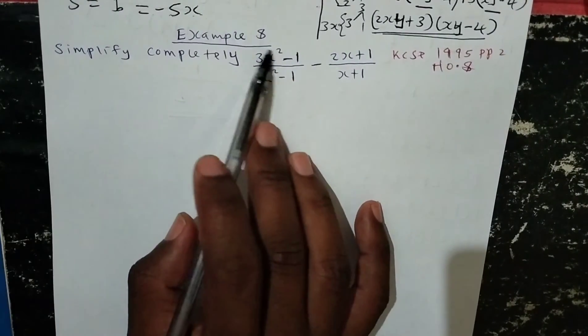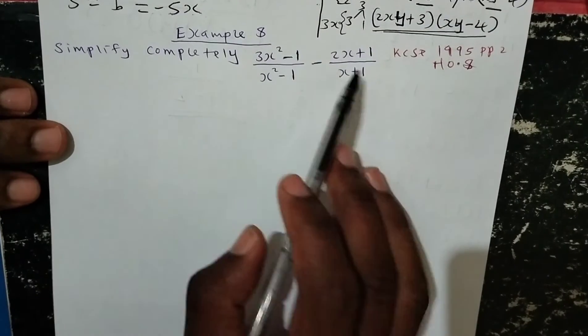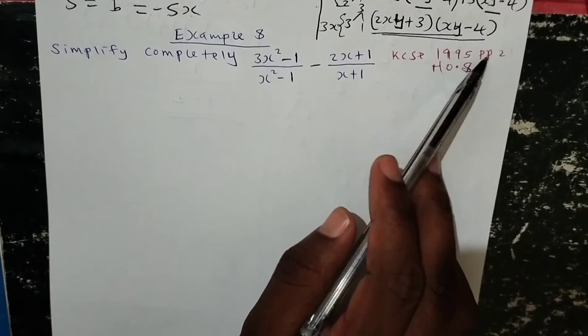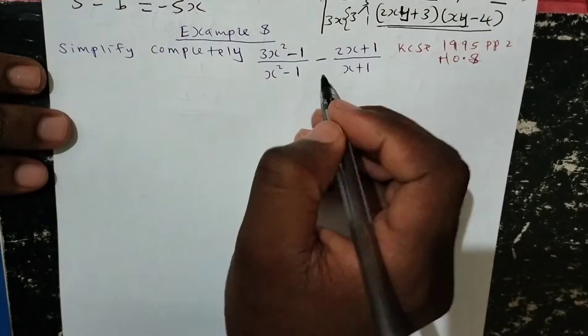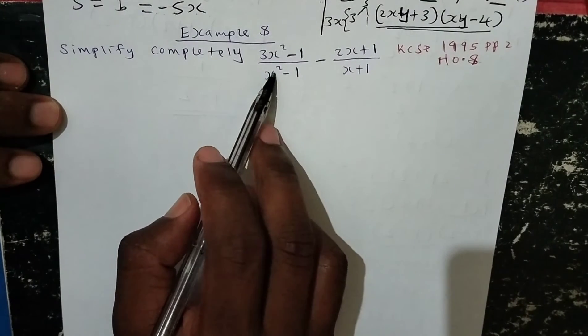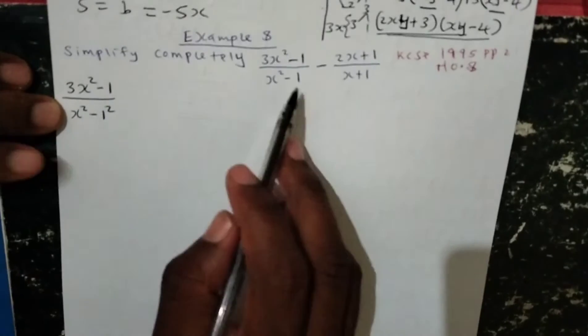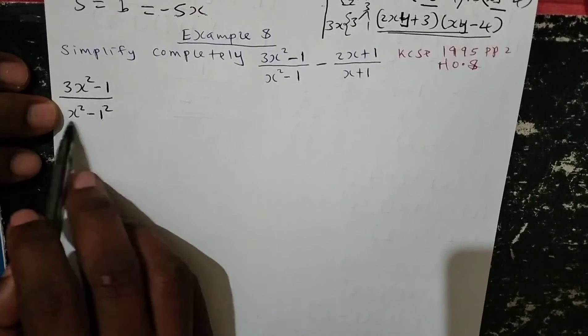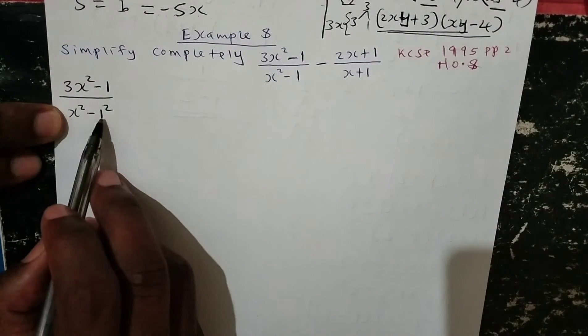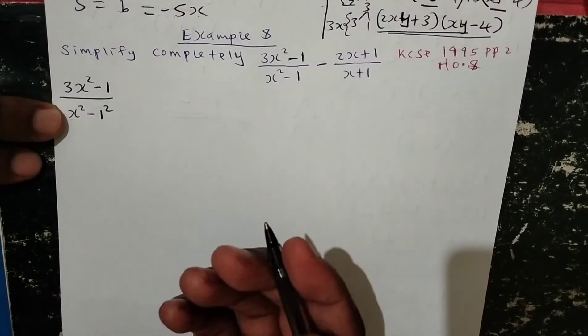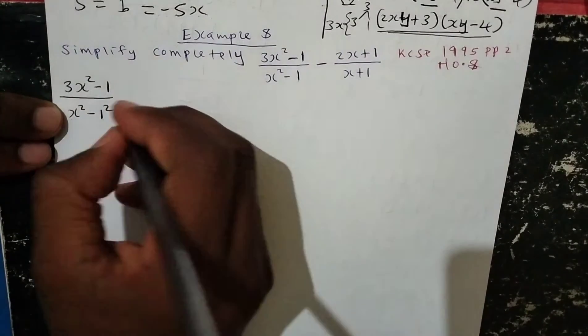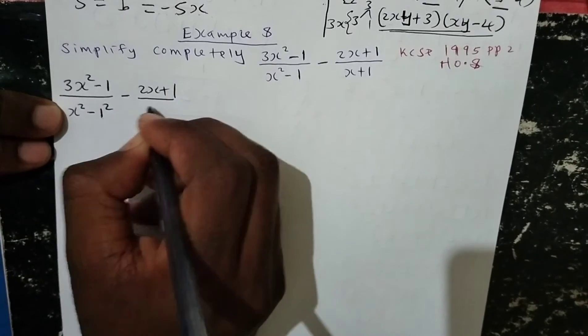Now example 8: simplify completely 3x squared minus 1 over x squared minus 1, then minus 2x plus 1 over x plus 1. These are past case equations from 1995, paper 2, question number 8. Note that x squared minus 1 is the same as x squared minus 1 squared, which introduces a difference of two squares.